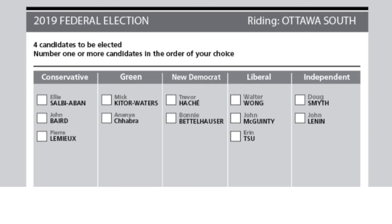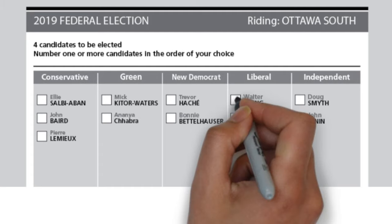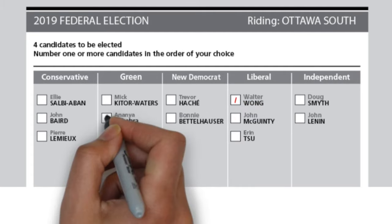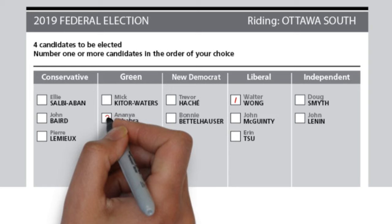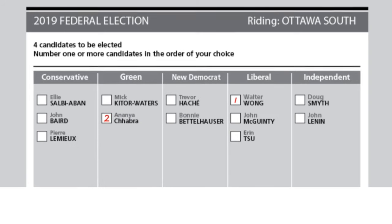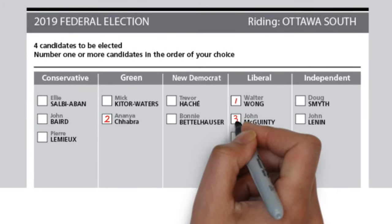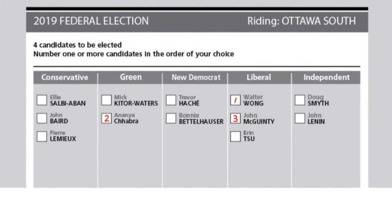This is what an STV ballot might look like for Ottawa South. The system encourages parties to run more than one candidate, which allows voters to decide who they prefer. Voters would fill out ballots with 1, 2, 3 preferences, and can choose candidates from different parties and rank as few or as many as they wish.